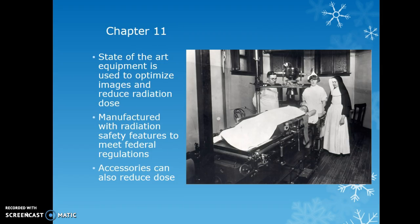State-of-the-art equipment is used to optimize images and reduce radiation dose. Older equipment is not state-of-the-art. Equipment is manufactured with radiation safety features to meet federal regulations, and accessories can also reduce dose. Federal regulations now regulate what type of x-ray machine you can have, its output in terms of KVP, amount of exposure, and leakage radiation.